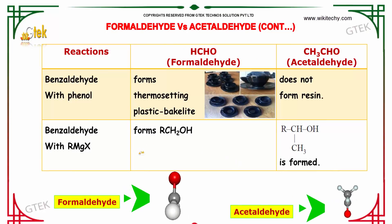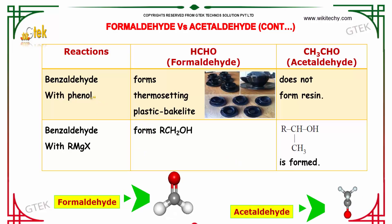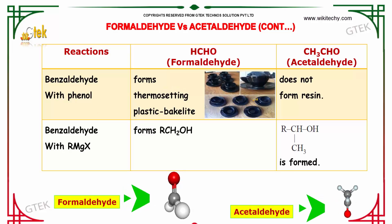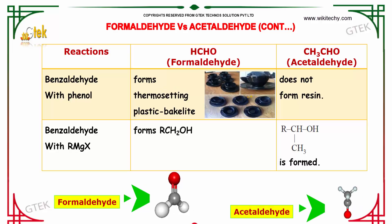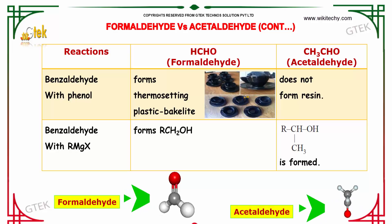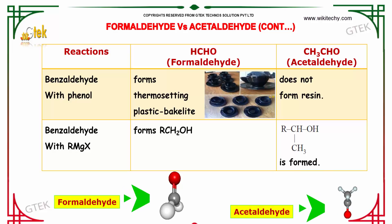When formaldehyde is made to react with phenol in the presence of an alkaline solution, it forms a thermosetting plastic, Bakelite, as we can see in this image here, whereas acetaldehyde does not form any resin when reacted with phenol.